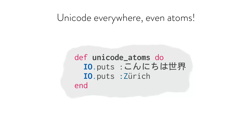Secondly, Unicode is invading every last nook and cranny of the Beam, which is great. That includes Atoms. In Elixir, you can now write your Atoms with non-Latin, Unicode names — you don't even have to quote them, you can just type them straight in. This is a really nice touch for international developers, and it also removes one more gotcha when you change a string into an Atom. When we do — and it does happen — you no longer have to worry about whether you're only using Latin-1 characters.